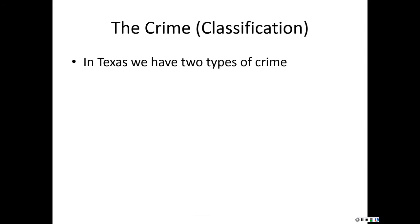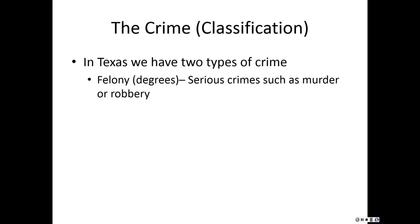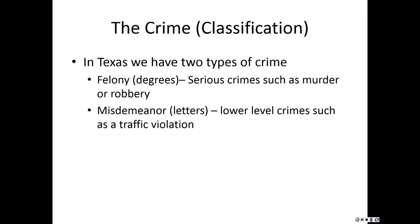In Texas, we classify state crimes into two types. First are felonies — the serious crimes such as murder or robbery — and we classify felonies by degrees, from most to least serious. Second are misdemeanors — lower-level crimes classified by letters — such as traffic violations, driving under the influence, assault, or theft.